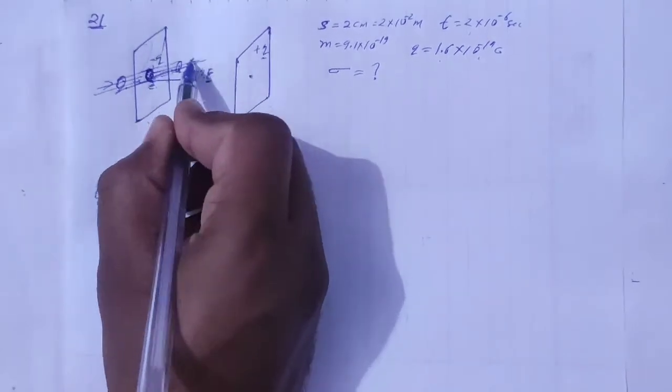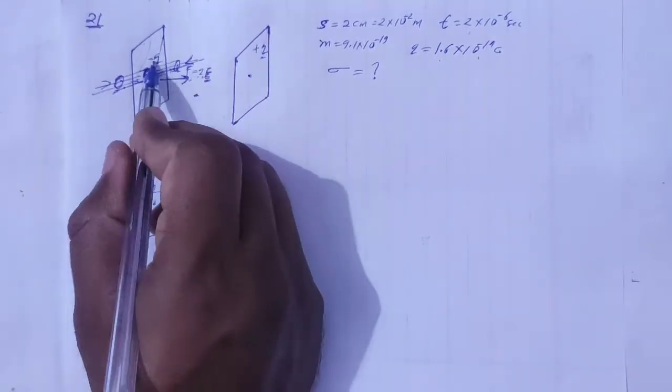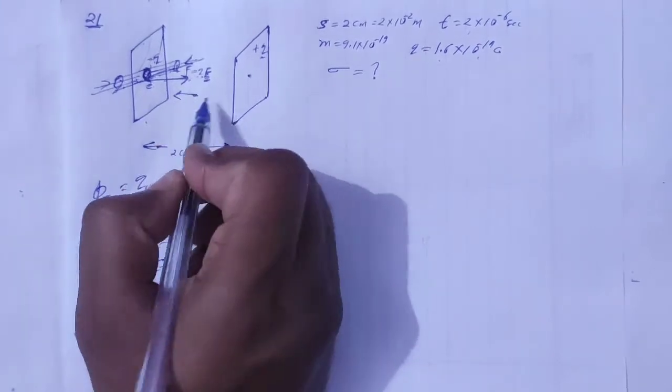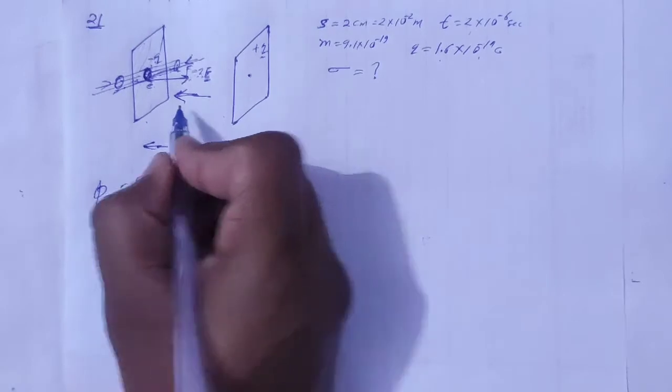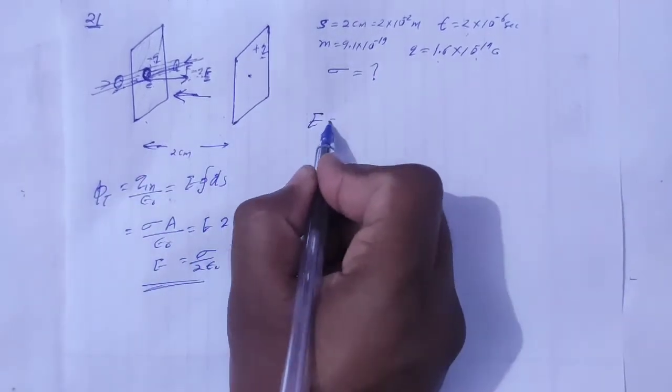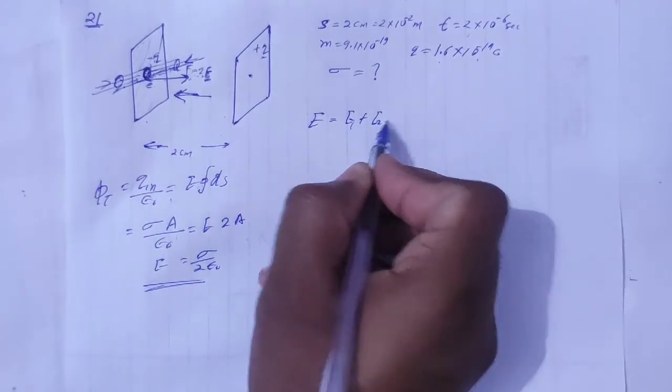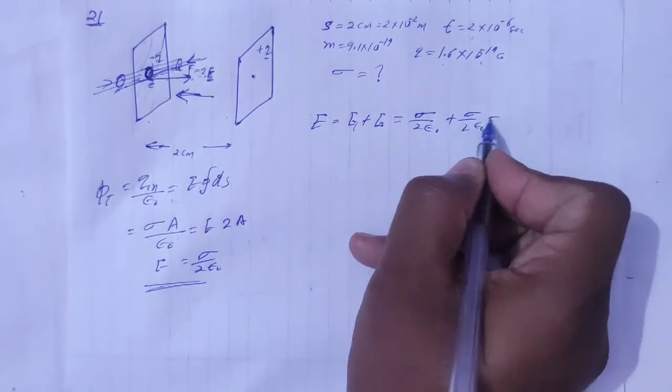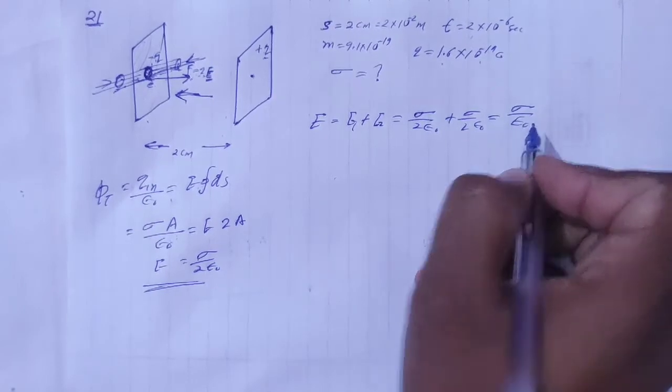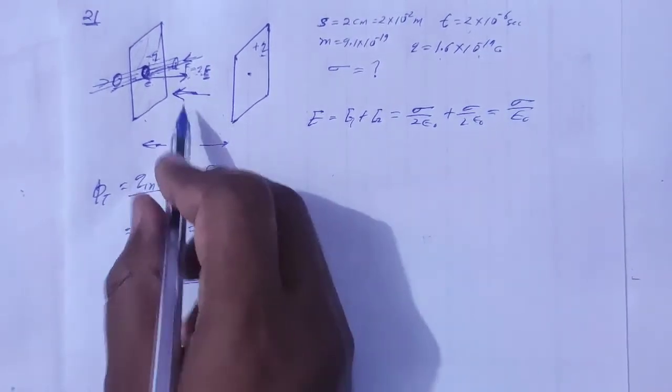Electric field is direction mein, yahan pe electric field with direction mein. Minus q ki wajay ce electric field is direction mein, aur plus q ki wajay ce electric field is direction mein. Total electric field lehenge e one plus e two. Dono electric field kya howoga, sigma upon 2 epsilon naught plus sigma upon 2 epsilon naught and electric field a jayega sigma upon epsilon naught.